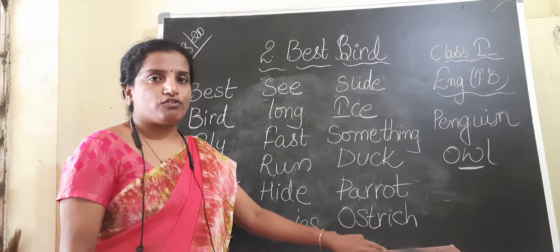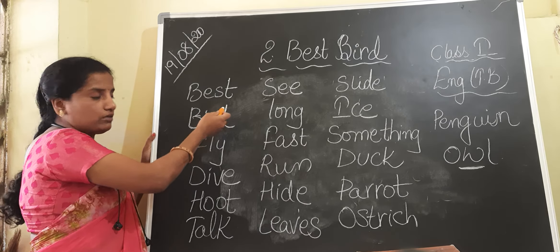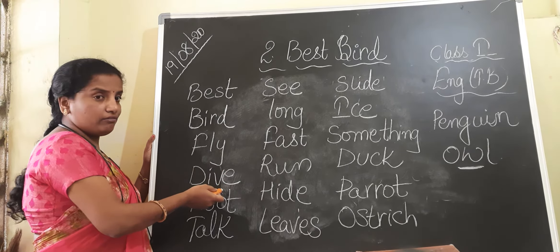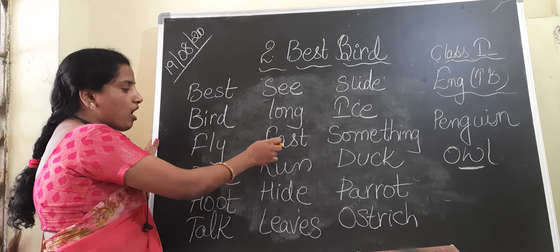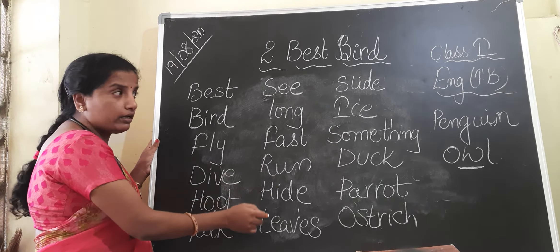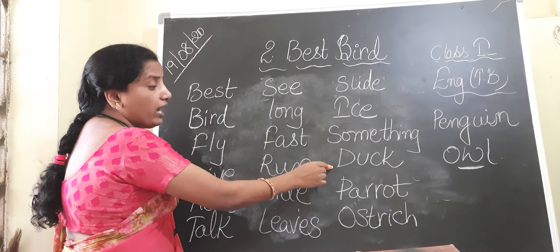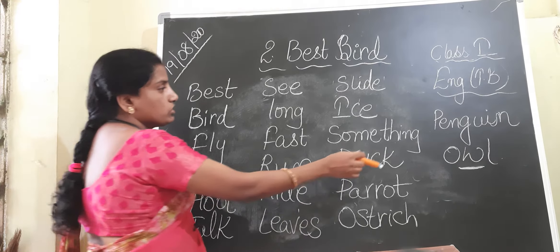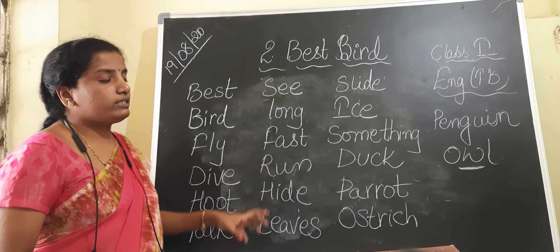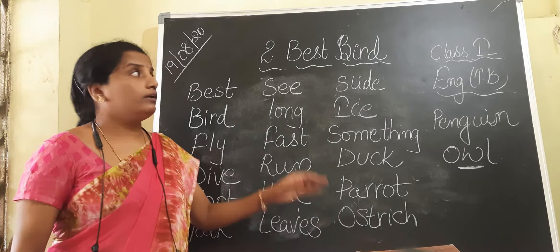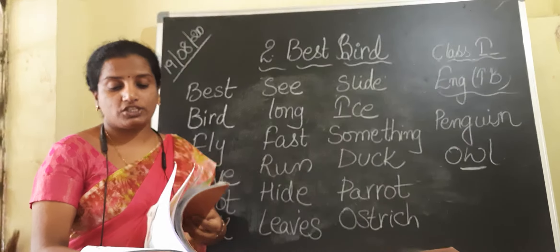Now, see — I am not reading the spelling, I am just pronouncing the words: Best. Bird. Fly. Dive. Hoot. Talk. Sea. Long. Fast. Run. High. Leaves. Slide. Eyes. Something. Duck. Parrot. Ostrich. Penguin. Owl. These are the few words related to the chapter, 'The Best Bird.'